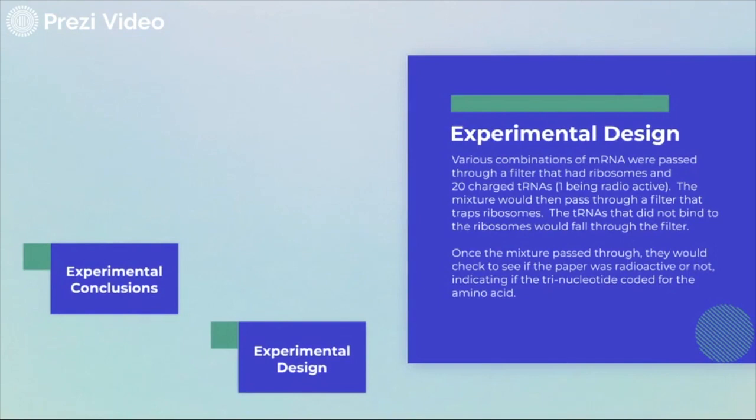Again in 1964, Nirenberg conducted another experiment, this time with Leder. Their experiment had various combinations of mRNA passing through a filter that had ribosomes, and 20 charged tRNAs, one being radioactive.